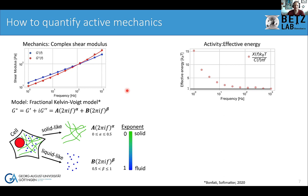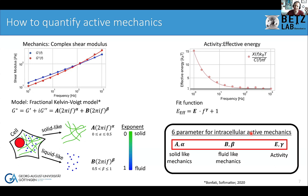This gives us intuition about these complicated curves: a solid-like component with prefactor A and power law exponent alpha, and a fluid-like component with prefactor B and exponent beta. The effective energy is also nicely fit with a power law, plus 1 for the thermal contribution (since everything is in units of kT). We can now describe what we call active mechanics with just six numbers: A, alpha, B, beta, energy prefactor E, and its power law exponent.